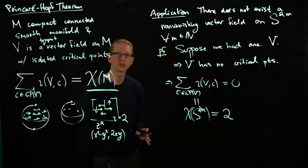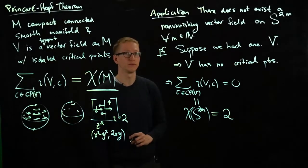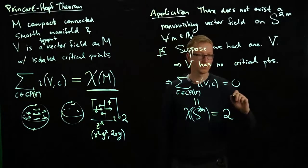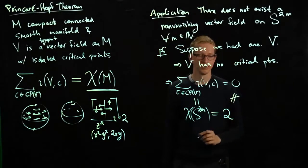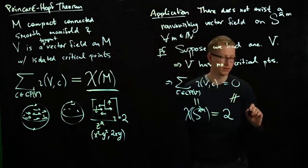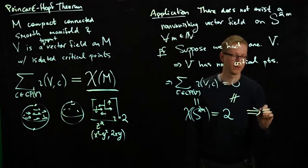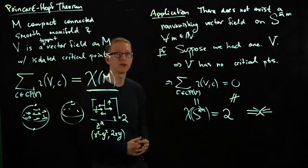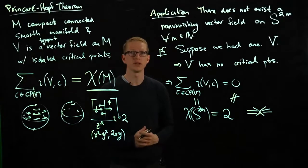and for an odd dimensional sphere it's always equal to 1—sorry, it's always equal to 0. And last time I checked, 2 is not equal to 0 as a real number. This is a contradiction, therefore we could not have had a non-vanishing vector field on an even dimensional sphere.